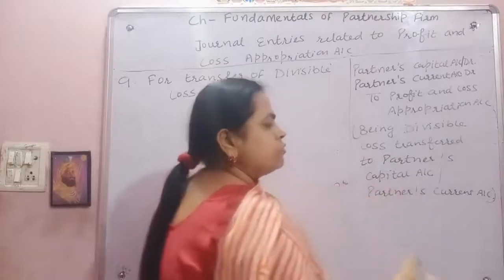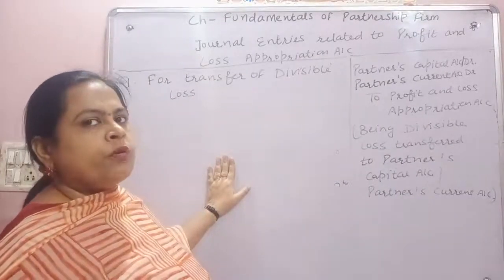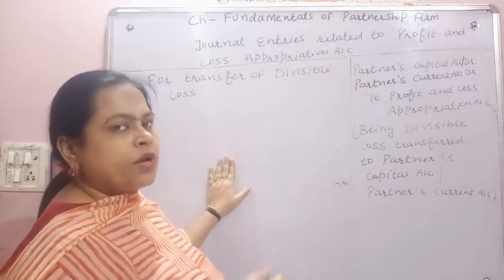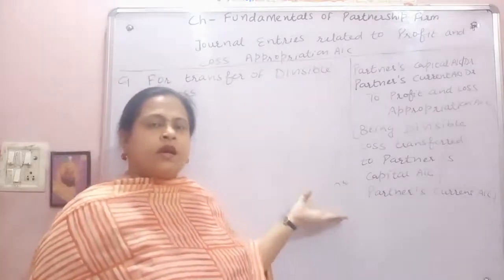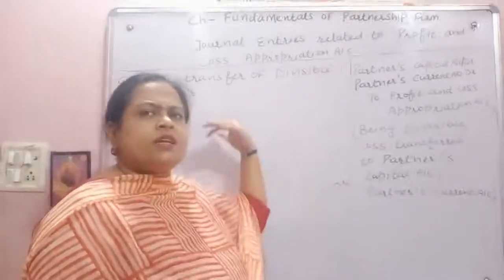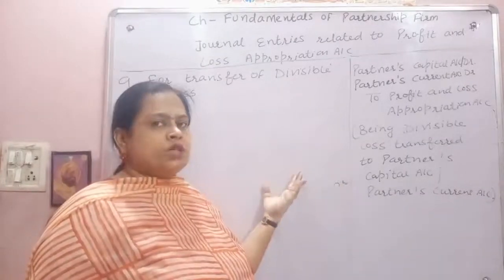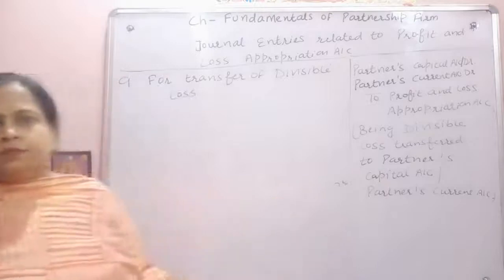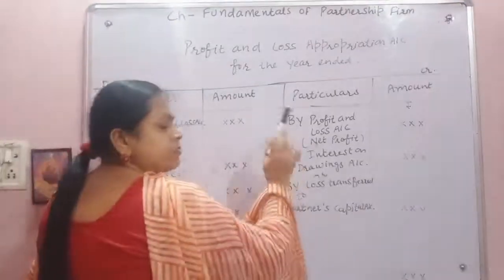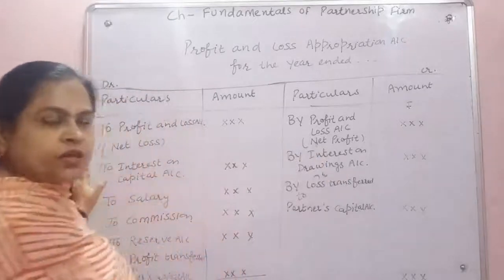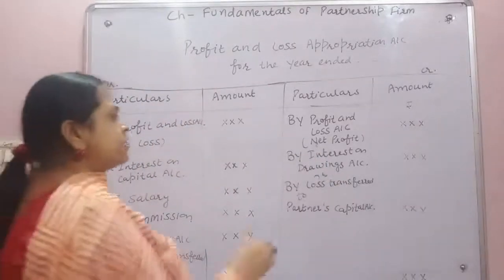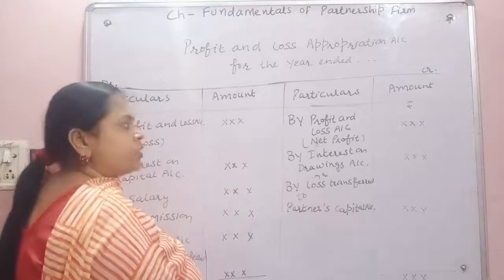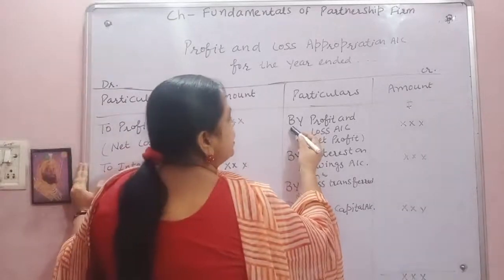अब सारी entries को revise करते हैं। Profit and Loss Appropriation Account आपने 5th lecture में देखा था। Transfer of profit: Profit and Loss Account debit to Profit and Loss Appropriation Account — by profit and loss account credit side में आता है।